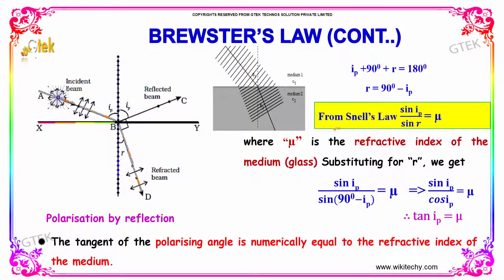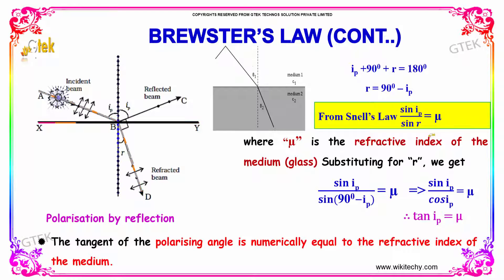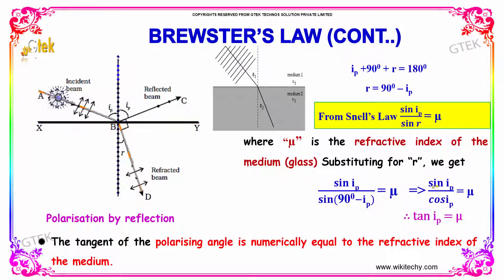From Snell's law, sin(ip) divided by sin(r) is equal to mu, the refractive index of the medium. Substituting for r, we get sin(ip) divided by sin(90° − ip) equal to mu, which simplifies to sin(ip) divided by cos(ip) equal to mu.